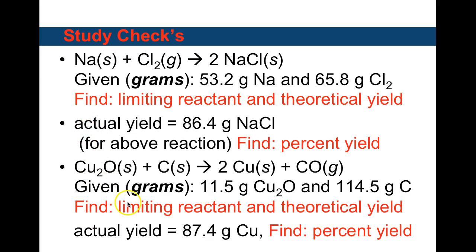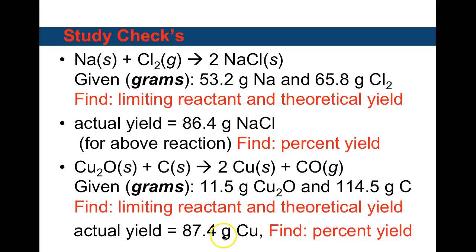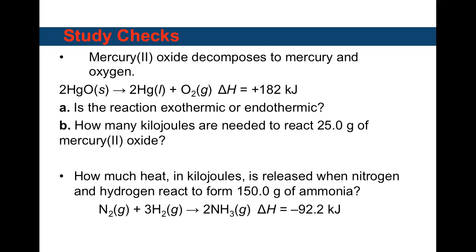Study check problems: First, sodium and chlorine forming sodium chloride — given 53.2 grams of sodium and 65.8 grams of chlorine, find the limiting reactant and theoretical yield. With the actual yield given, find the percent yield. Second, copper(I) oxide reacting with carbon to give copper and carbon monoxide — given 11.5 grams of copper(I) oxide and 114.5 grams of carbon, find limiting reactant, theoretical yield, actual yield, and percent yield.